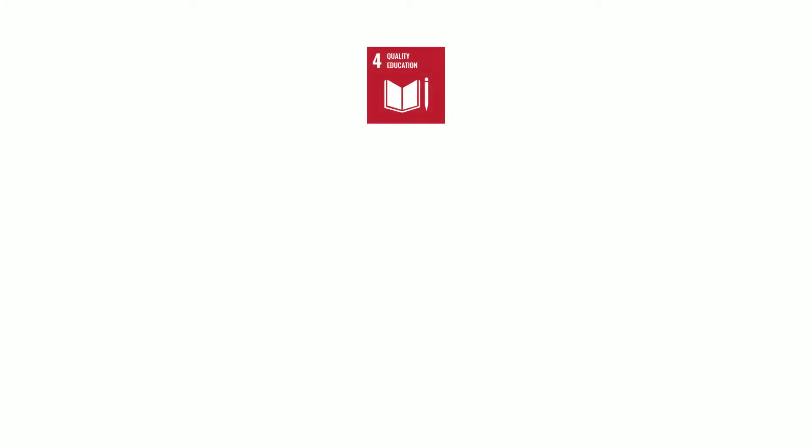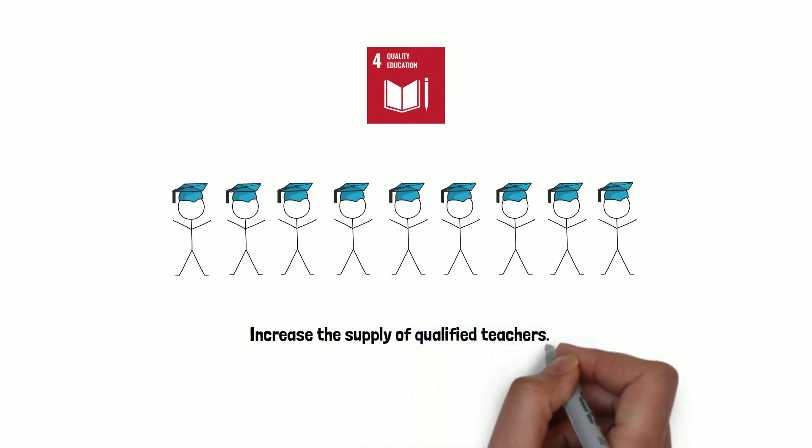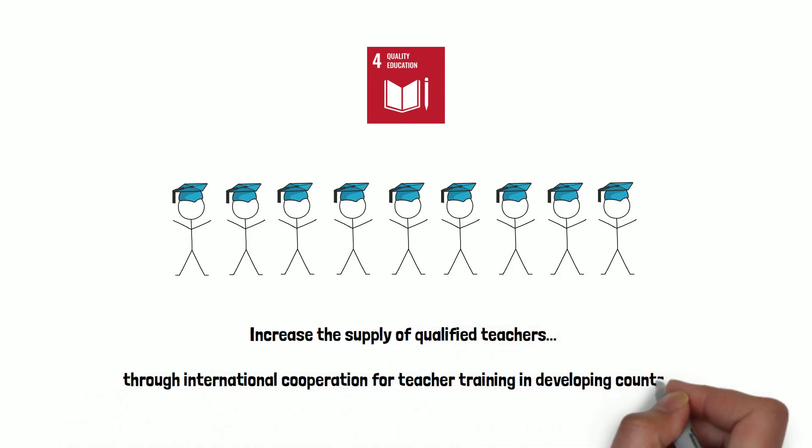One of the specific targets within the education section of the Sustainable Development Goals is as follows: By 2030, substantially increase the supply of qualified teachers, including through international cooperation for teacher training in developing countries, especially least developed countries and small island developing states.